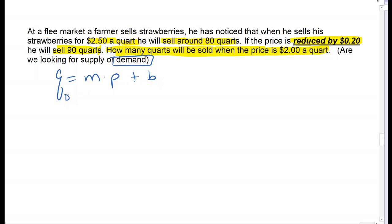In order to answer the question, even if you had gotten the supply and demand part incorrect, it's the same equation—it's just the point of view. Quantity represents the demand. When it's a supply, quantity represents the amount of strawberries the farmer brought to the market, which is actually our next question.